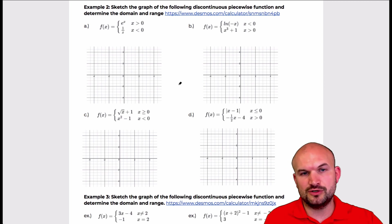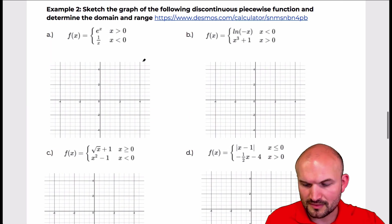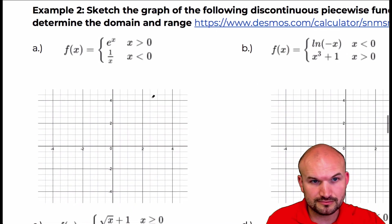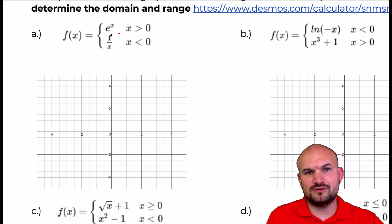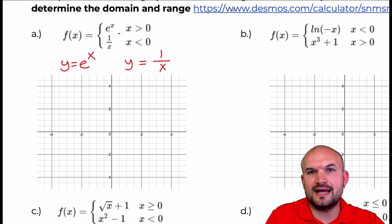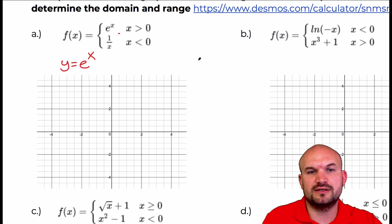Going back to what I did in example one, I'm basically just going to follow the rules of what the graphs look like and then apply the constraints. In this first one, I have y equals e to the x. You're just thinking about graphing these separately — what does y equals e to the x look like, and what does y equals 1 over x look like?